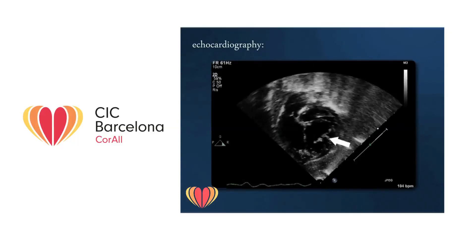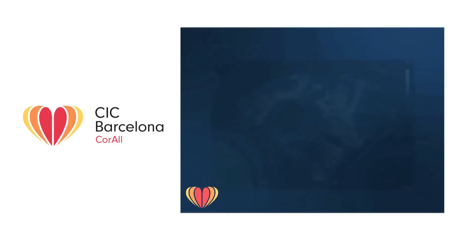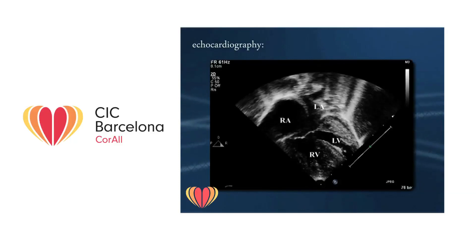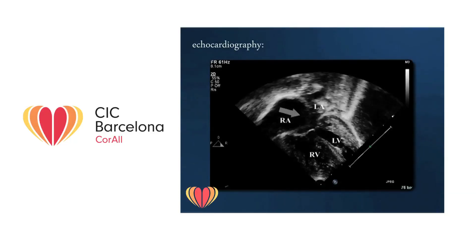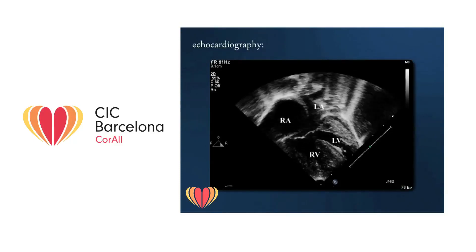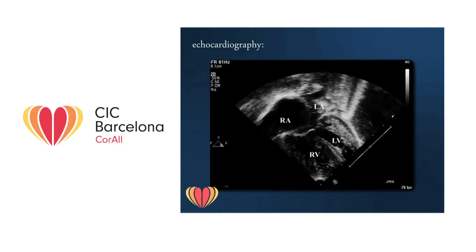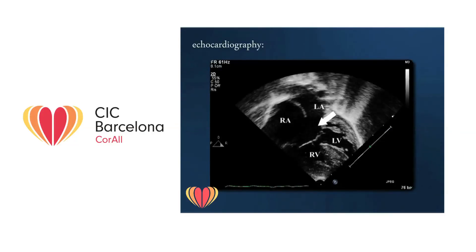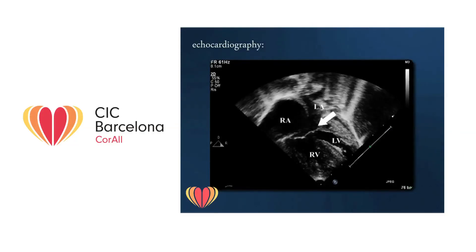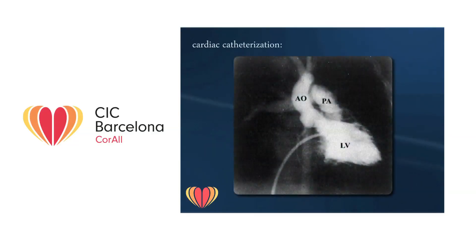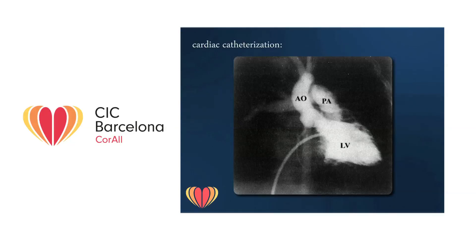The subcostal short axis view of a case of complete atrioventricular septal defect shows the common atrioventricular valve with five leaflets opening into both ventricles. On the apical four-chamber view, the ostium primum-type atrial septal defect and the posterior or inlet-type ventricular septal defect are associated with a common atrioventricular valve, usually with five leaflets. Cardiac catheterization is indicated only when patients are over one year old, when the degree of pulmonary vascular disease must be quantified, or in cases with associated cardiac malformations. The left ventriculogram shows a suggestive picture in which the left ventricular outflow tract presents a gooseneck deformity.